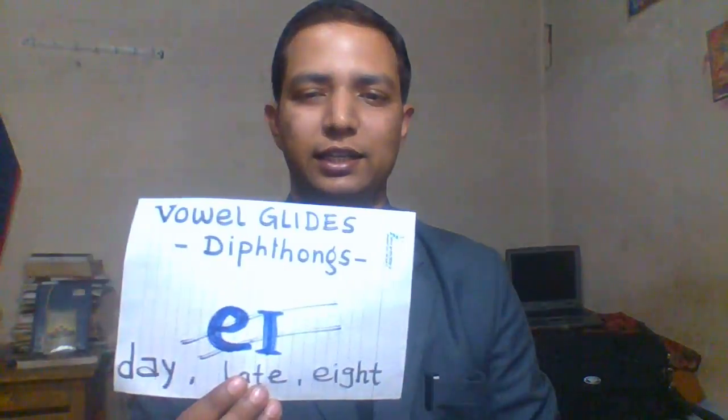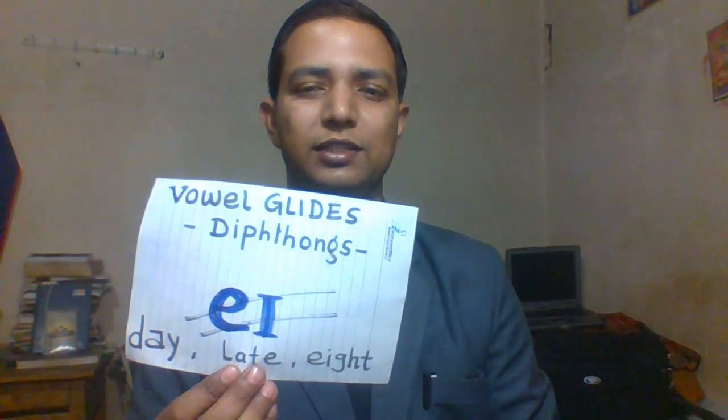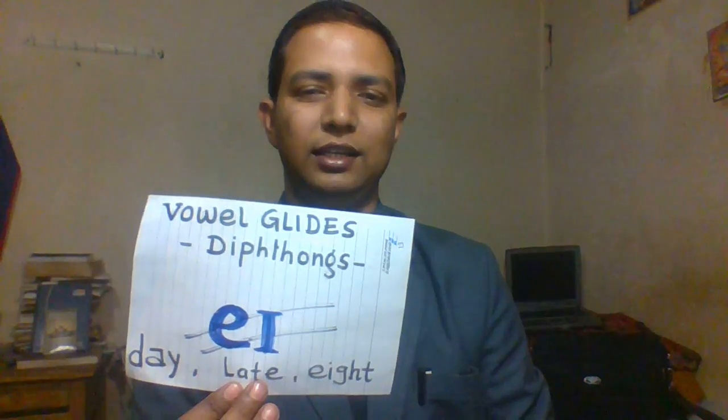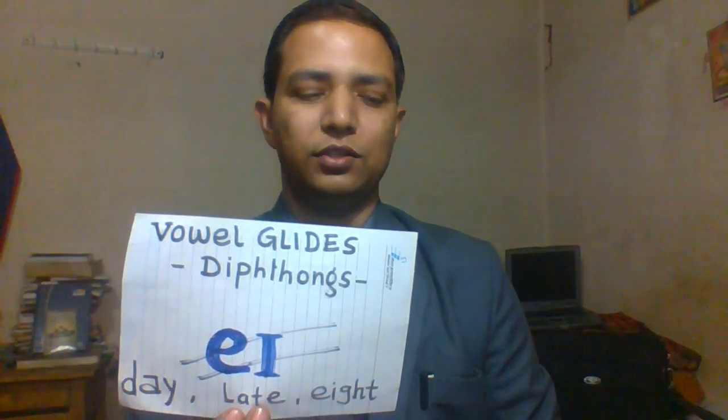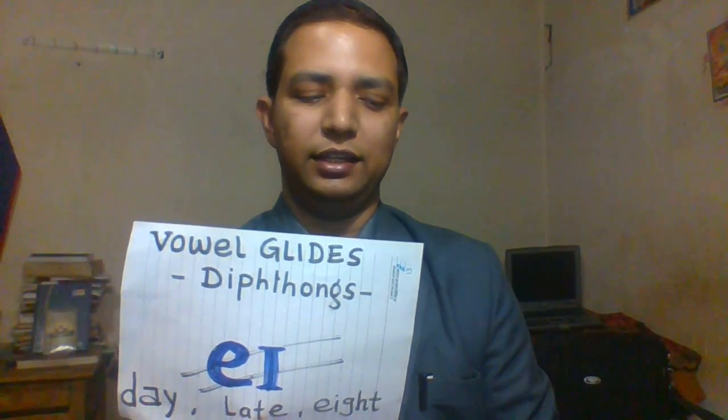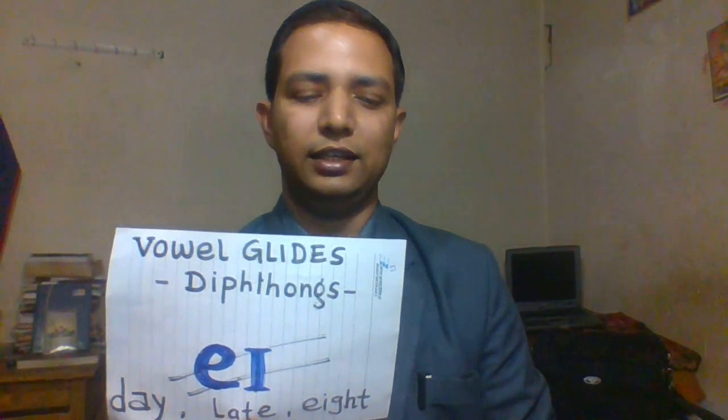Next, sounds start with diphthongs — vowel glides — meaning two vowels together. There are two vowel symbols combined, and that is called a diphthong or vowel glide. The first one is the EI sound, as in day, eight, and late. Next is the AI sound — A plus E — as in time, idea, and cry.